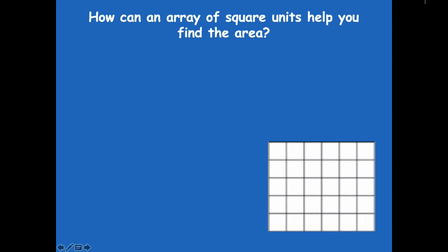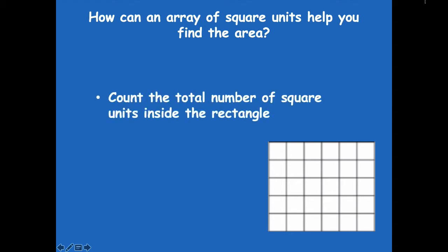Well we know that we can count the total number of squares inside the rectangle, we can skip count the rows, and we can multiply the sides. So there's several different ways that we can find the area of square units.